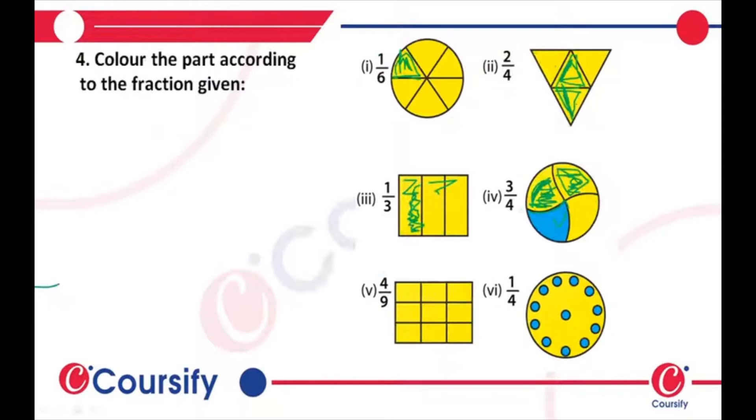Next question we have 4/9. Checking, we have 9 boxes in total, so 4/9 will be 1, 2, 3, and 4. So this will be 4/9.